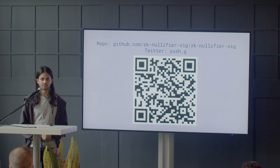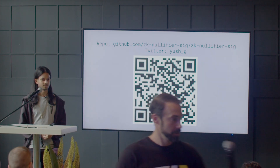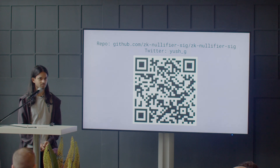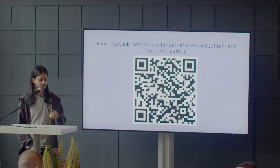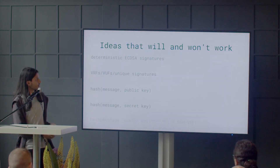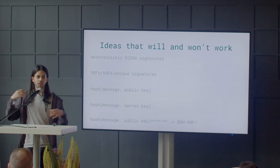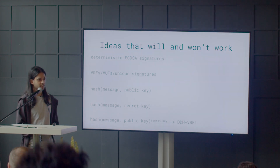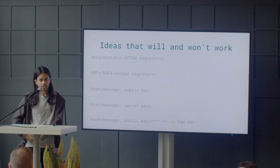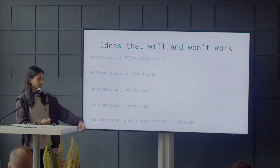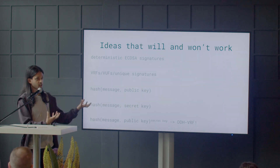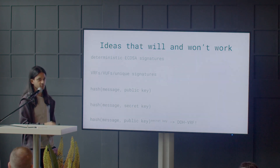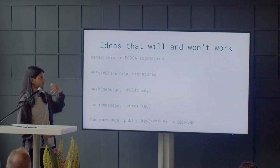Why can't deterministic ECDSA signature be used as a nullifier? The way deterministic ECDSA signature works is it's effectively identical to a non-deterministic ECDSA signature except you seed the randomness using the private key. Someone could generate a non-deterministic ECDSA signature by just taking their private key, using whatever randomness they find from their PC, generating a non-deterministic signature that can change every time. To know whether the user has done a deterministic or non-deterministic signature, we need to know if they seeded their randomness correctly — we need their secret key to verify it was calculated correctly. This would require the user to paste their secret key into the ZK-SNARK and basically break the properties we want.